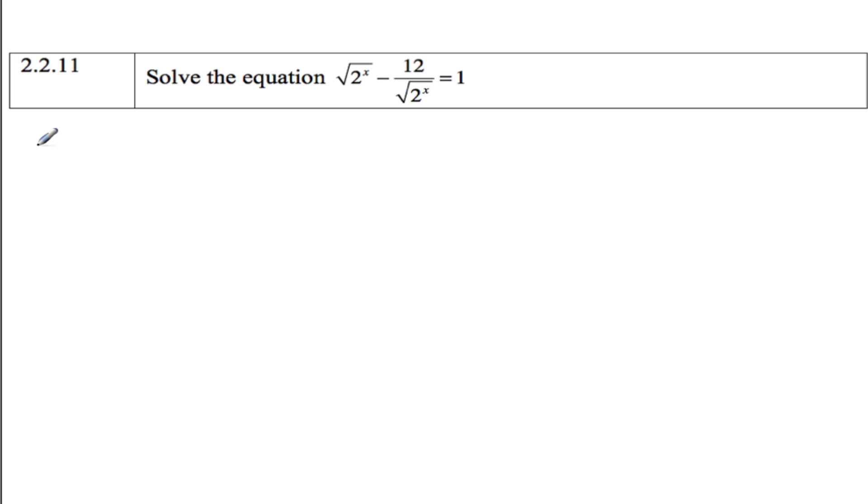So what we're going to do at the start is we're going to set A equal to root 2 to the X. So that means we'll have A minus 12 over A equals 1.